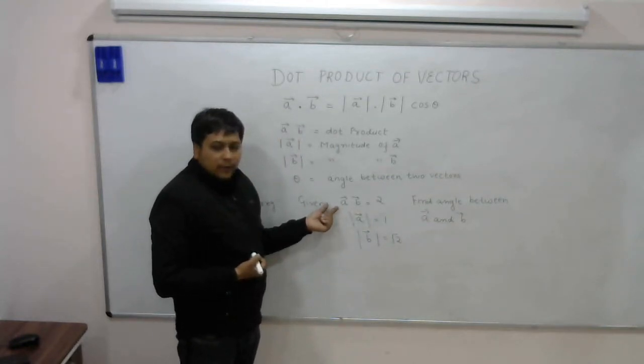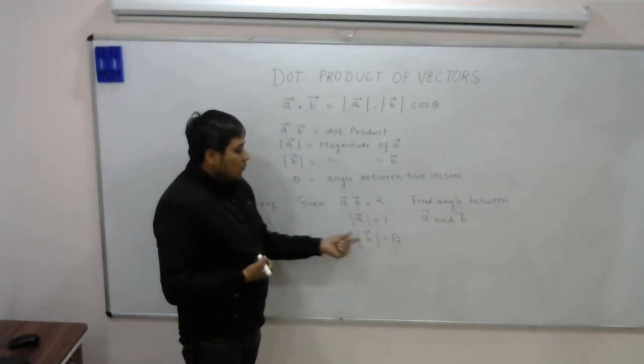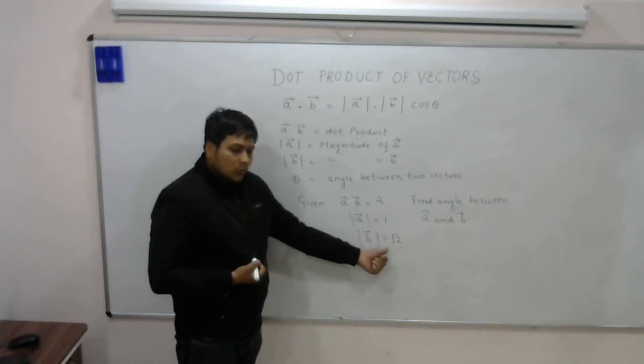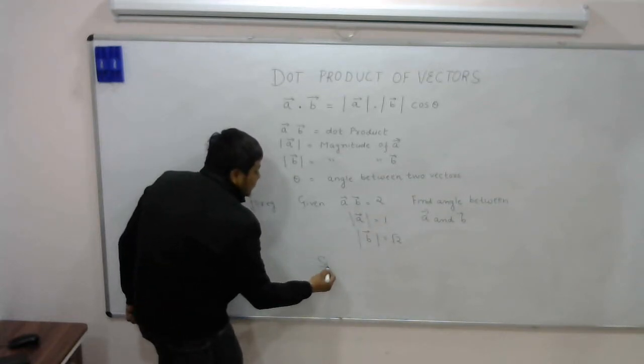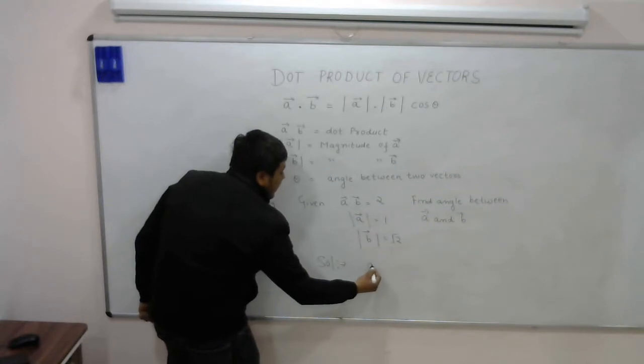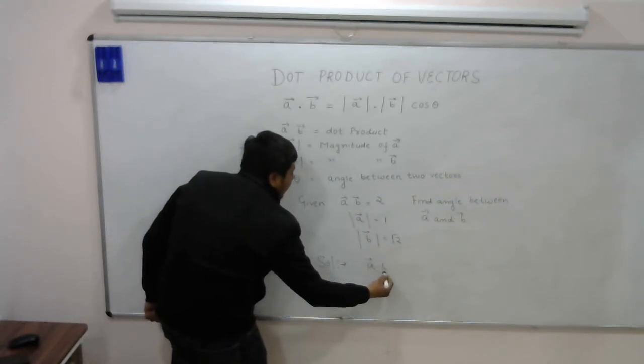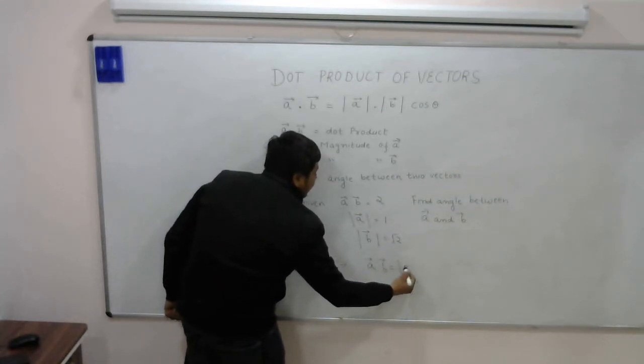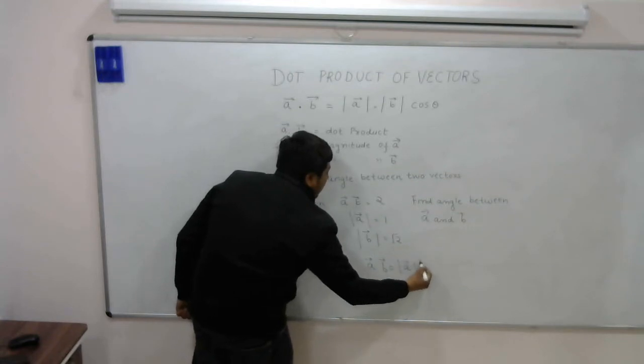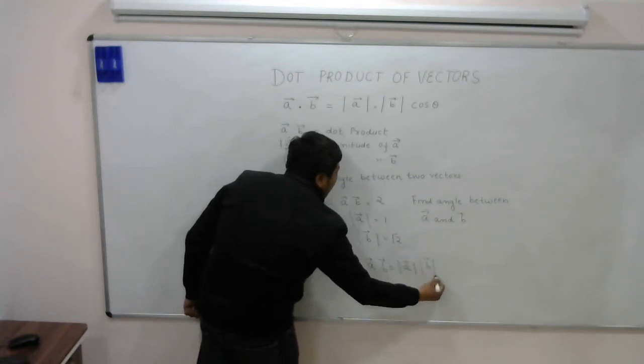So in this question we have been given A dot B is 2, mod A is 1, mod B is root 2. For the solution, we know that A dot B is mod A into mod B cos theta.